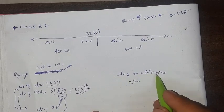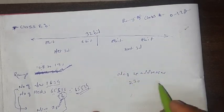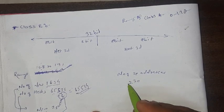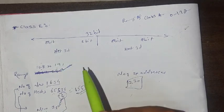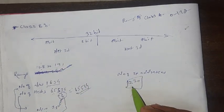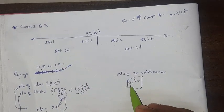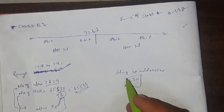Now here the number of IP addresses in Class B, these are what? 2 raise to 30. Means in Class B, the total number of IP addresses available are 2 raise to 30.